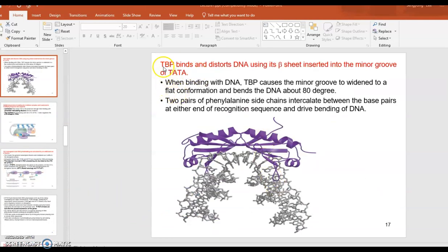This diagram shows you how the TATA binding protein can unbend the DNA using its beta-pleated sheet structure which can go into the minor groove of the DNA in the promoter sequence area. When binding with DNA, TATA binding protein can cause the minor groove to widen open. It can become a flat conformation, so that triggers a bending of DNA about 80 degrees. The two pairs of phenylalanine side chains intercalate between the bases. Intercalating means going in between the bases at either end of the recognition sequence and drives DNA bend. DNA is bent around that TATA area because TATA is less rigid because there's only double hydrogen bonds there. DNA could be bent. That's the starting of the melting of the DNA to two strands. That's initiated by TATA binding protein.